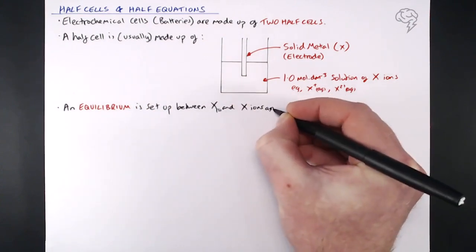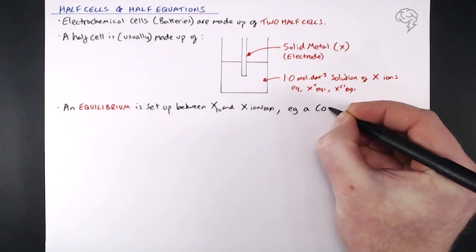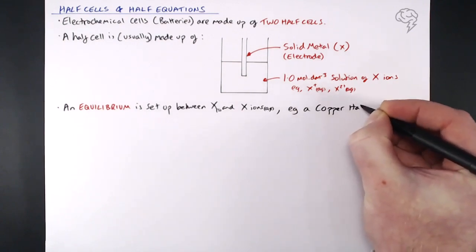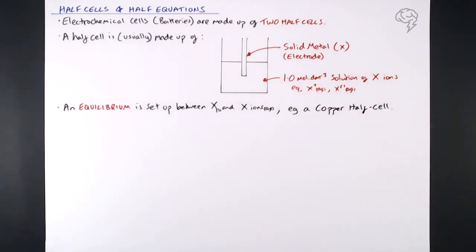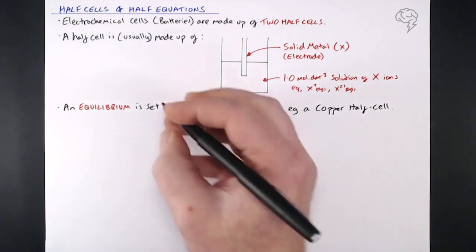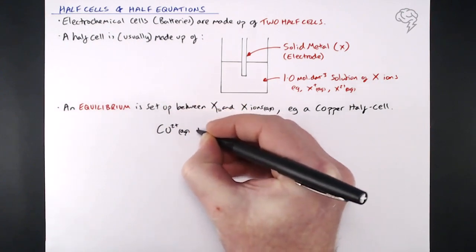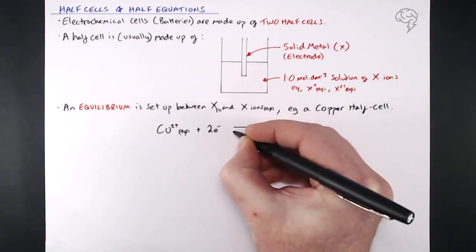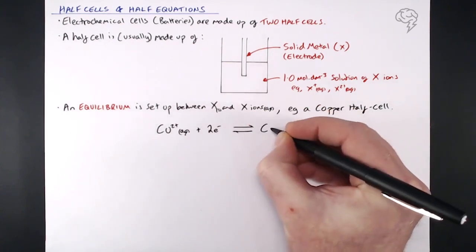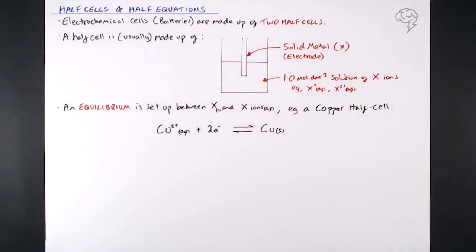So for example, a copper half cell. This is the standard way in which we write all half equations, which is really important. We always start with the oxidized version — in this case it's the Cu²⁺ ion in that solution. So: Cu²⁺(aq) + 2e⁻ ⇌ Cu(s). It's not always two electrons — it just so happens that Cu²⁺ needs two electrons to make Cu. If you've got a one plus ion, you only need one electron and so on.